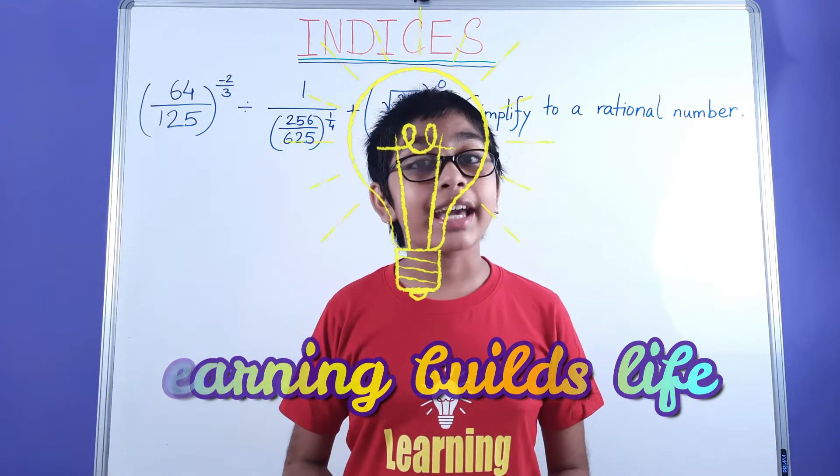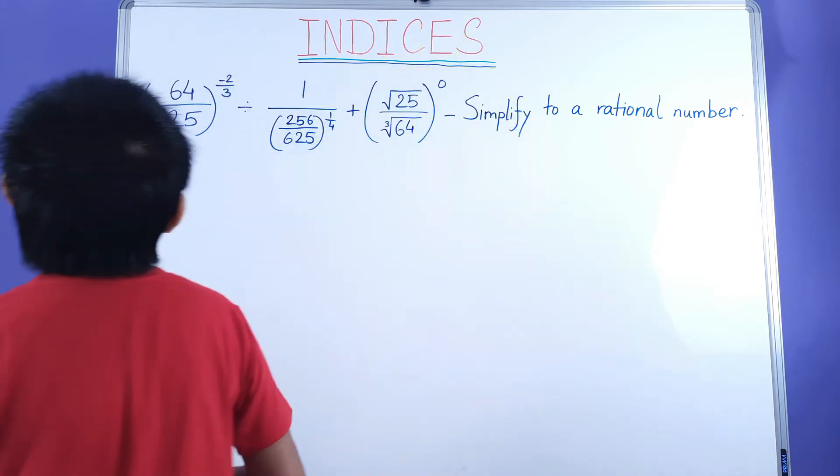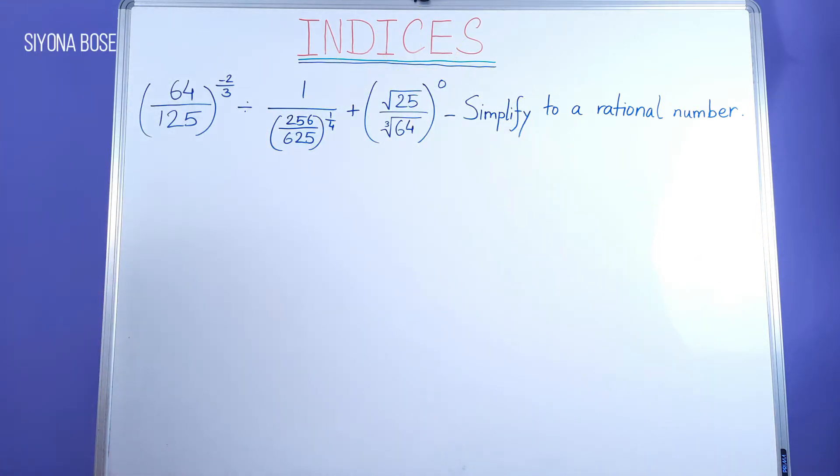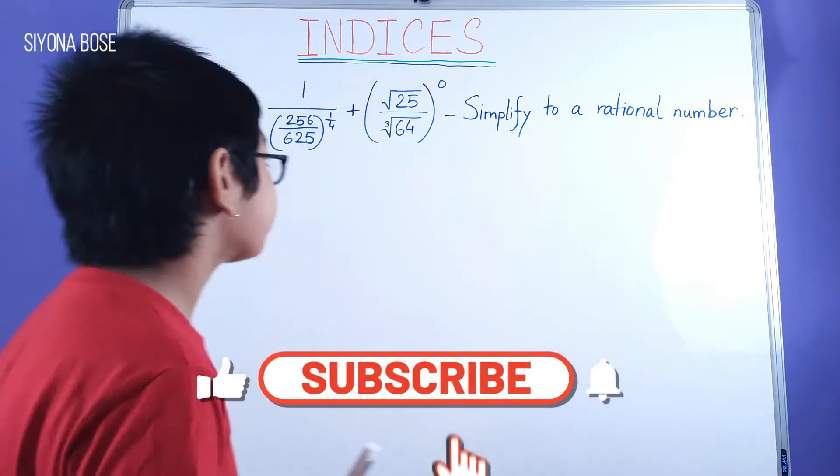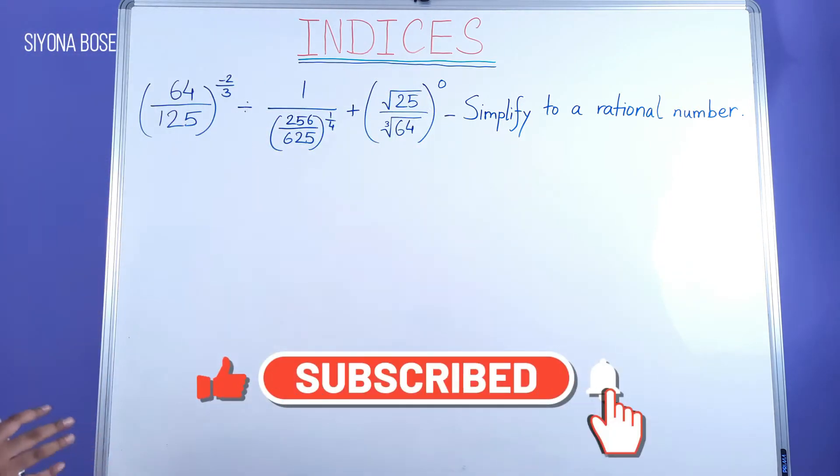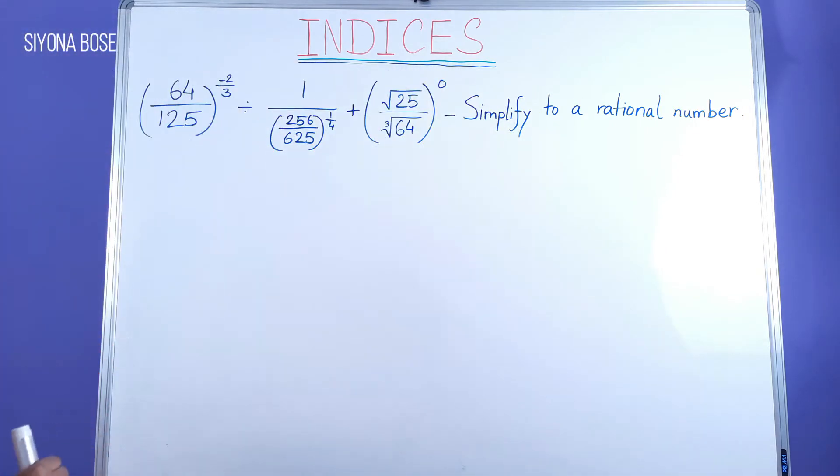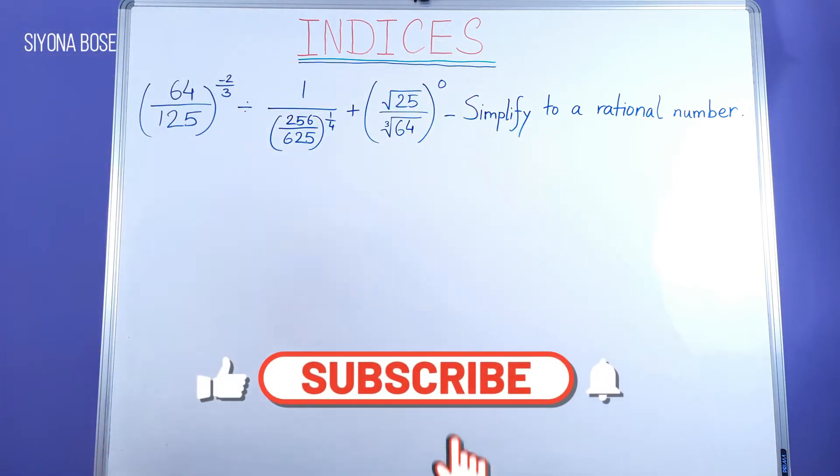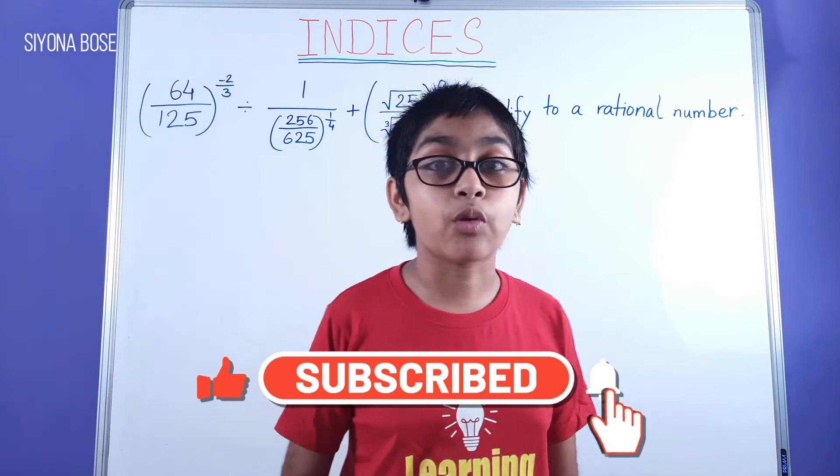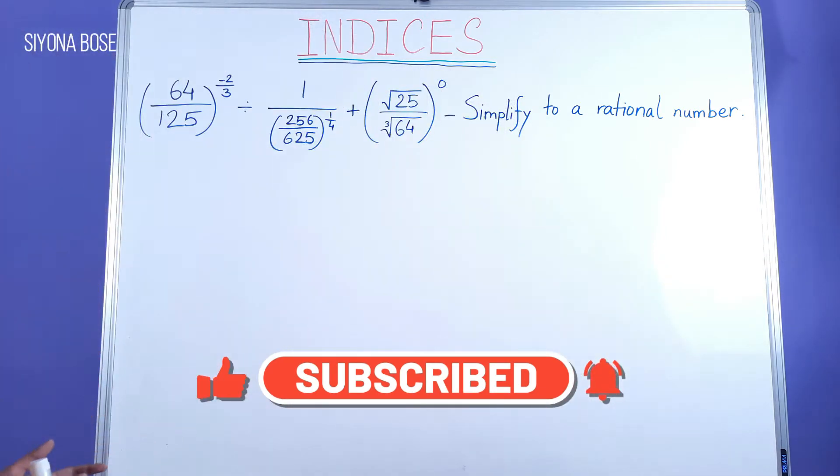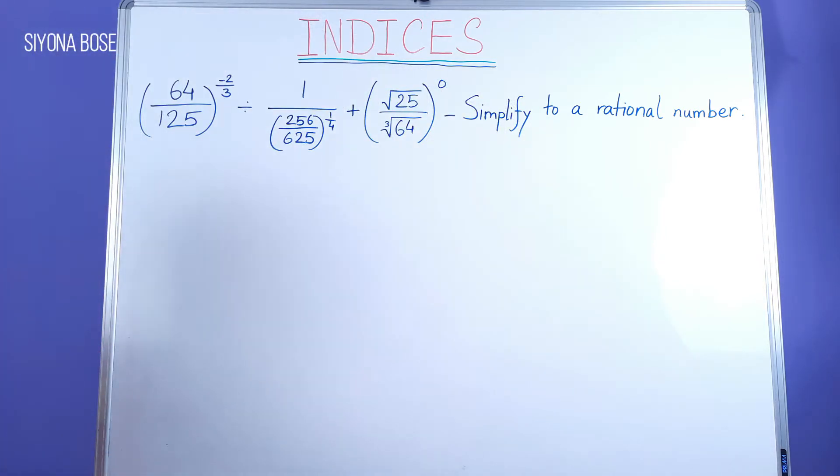Let's take a look at today's sum. 64 by 125, hold the power of minus 2 by 3, divided by 256 by 625, hold the power of 1 by 4, plus root over 25 by cube root of 64, hold the power of 0, simplify to a rational number.